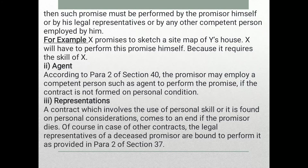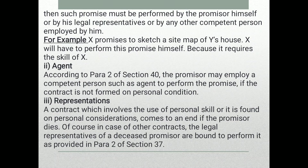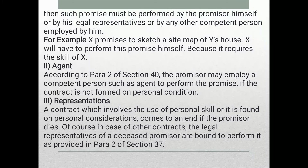According to Section 40, the promisor may employ a competent person, such as an agent, to perform the promise if the contract does not require personal performance. A contract which involves personal skills or is founded on personal conditions comes to an end if the promisor dies.